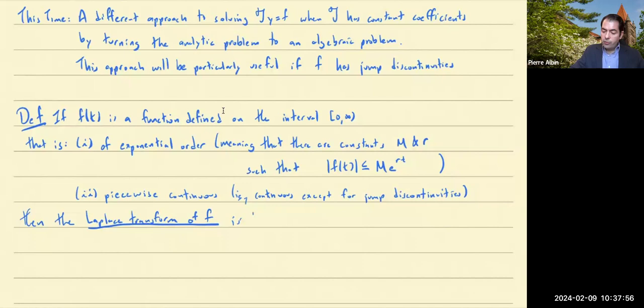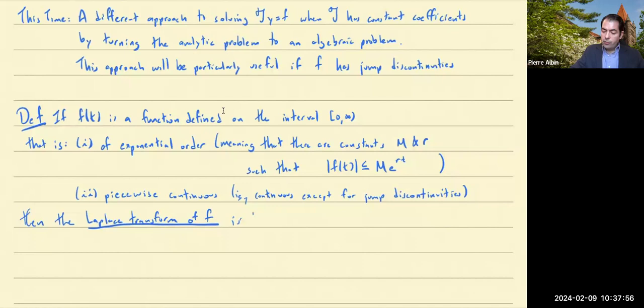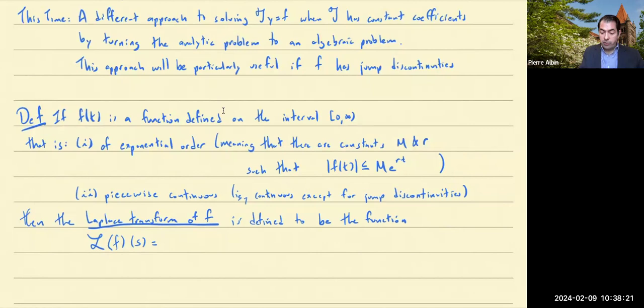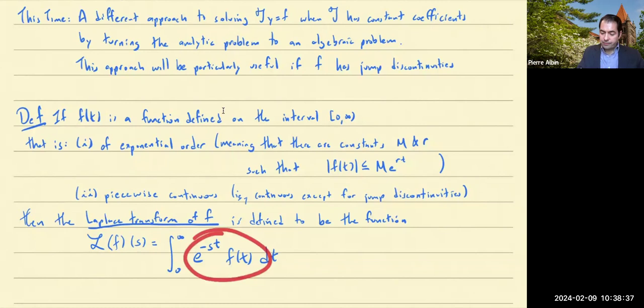The Laplace transform of f is a new function. So curly L applied to f — this is a function we're going to call its argument S instead of the argument T for little f. What you do is you integrate from zero to infinity of e to the minus ST times f of T, dT. Notice that the integrand depends on both S and T, but you integrate out the T so at the end you end up with a function just of S.